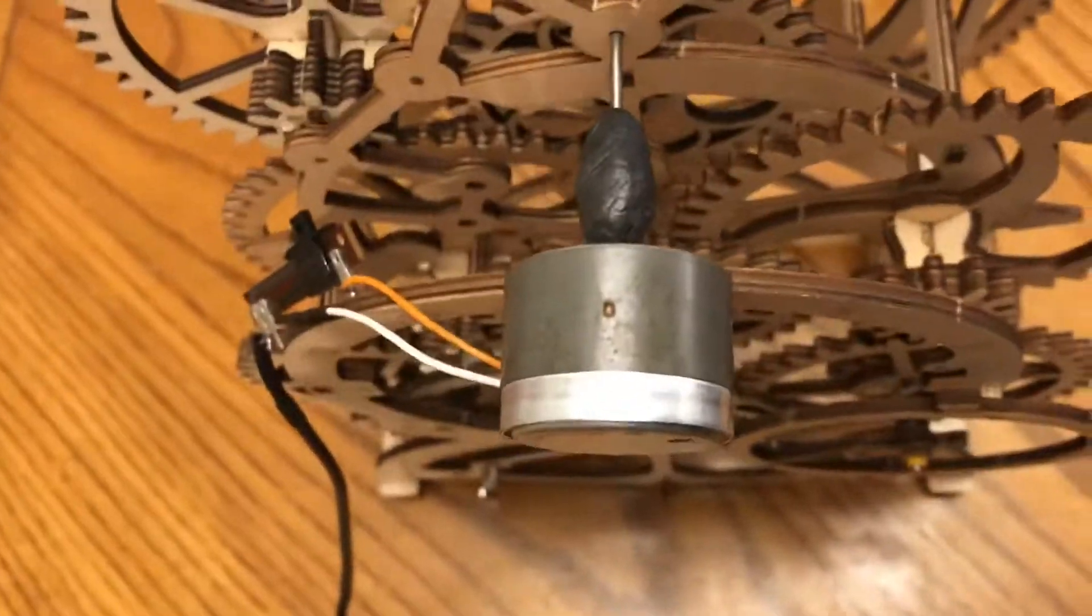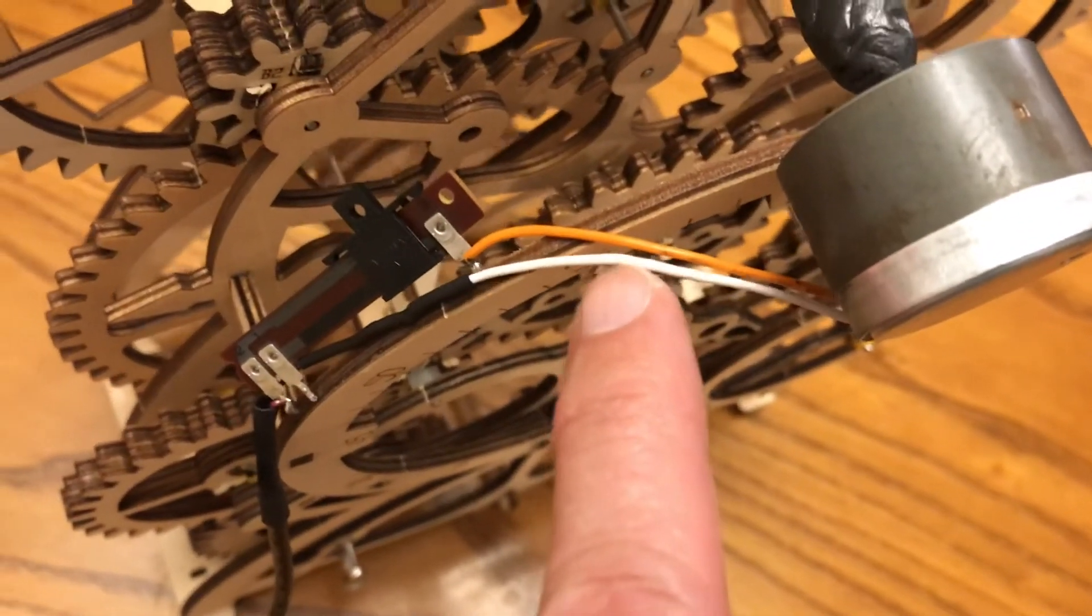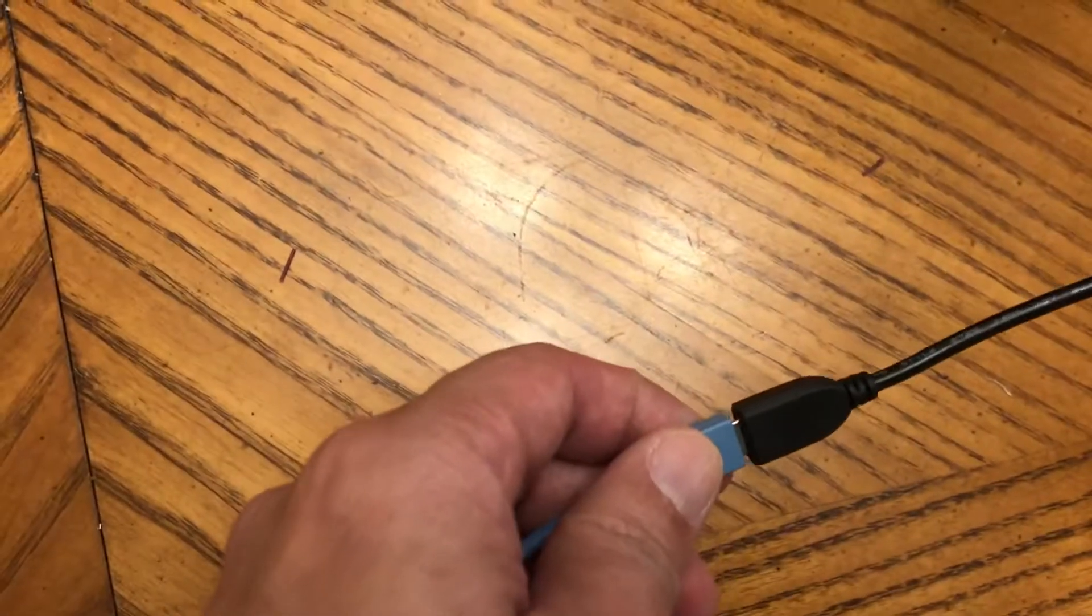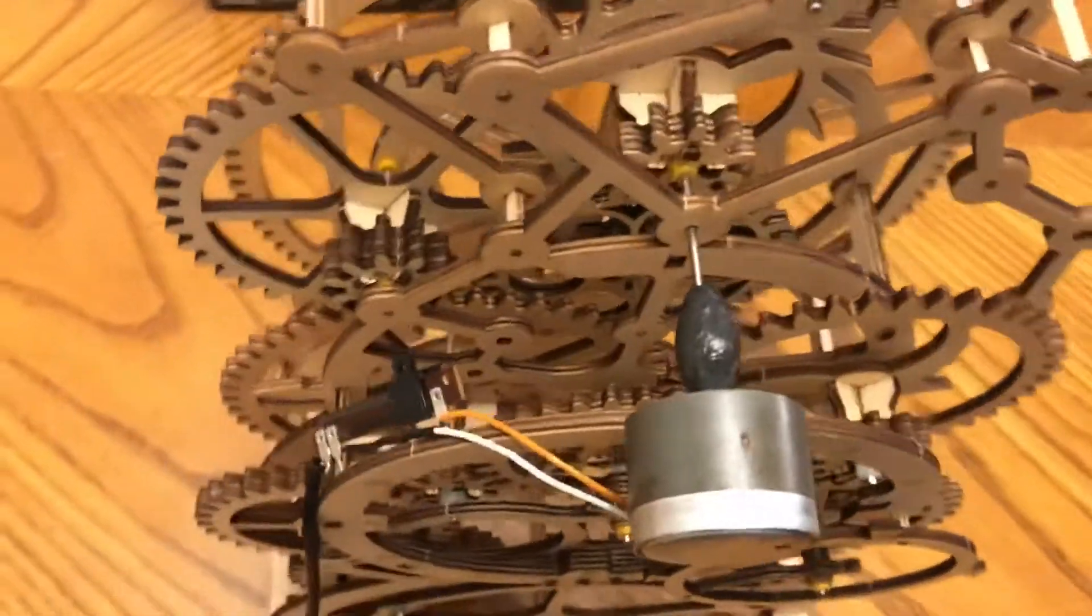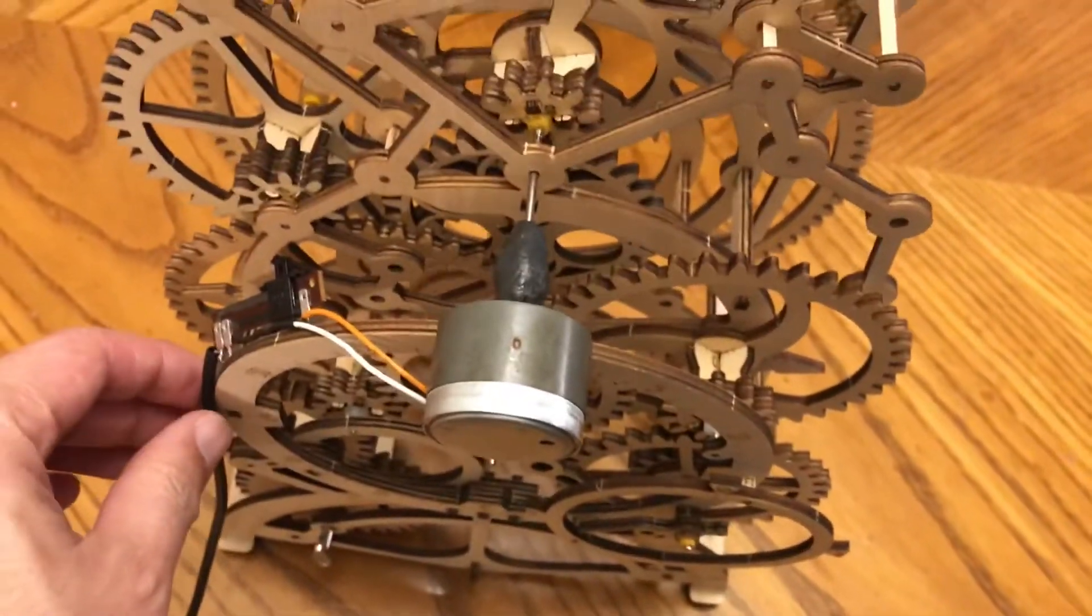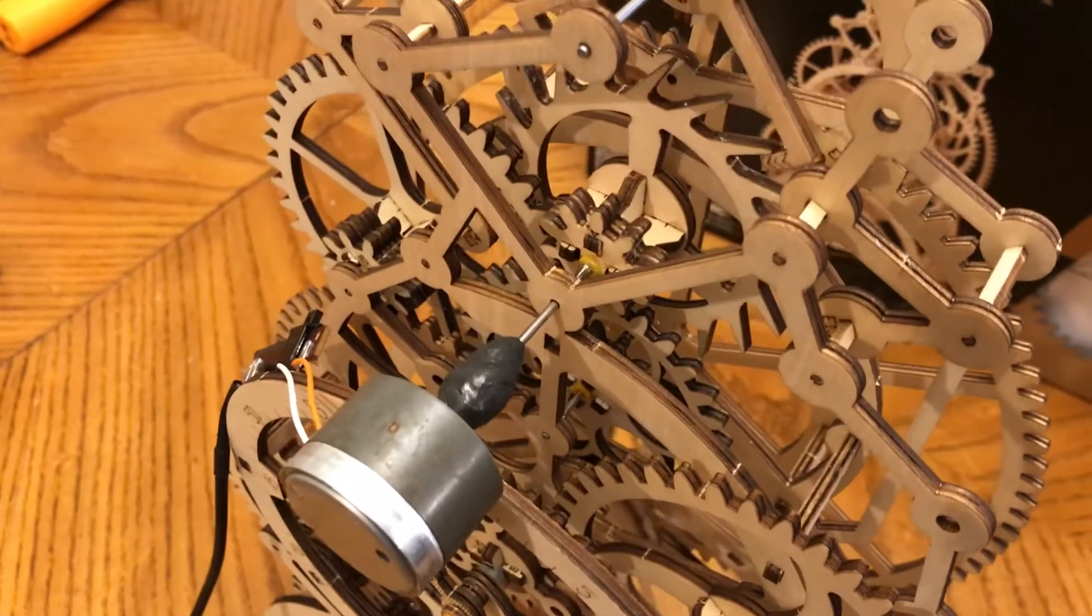I didn't want to feed it the full five volts because that's a little bit too much power. So it goes through this variable resistor, and then I just hook it up to a standard five volt USB. This keeps pretty good time, within a minute within a 24 hour period. That is what I did to modify this so it keeps running 24 hours a day.